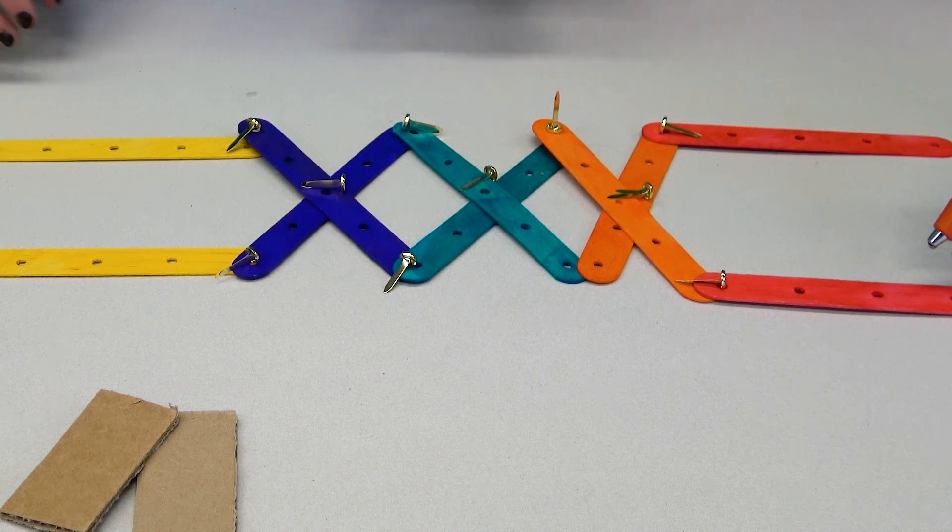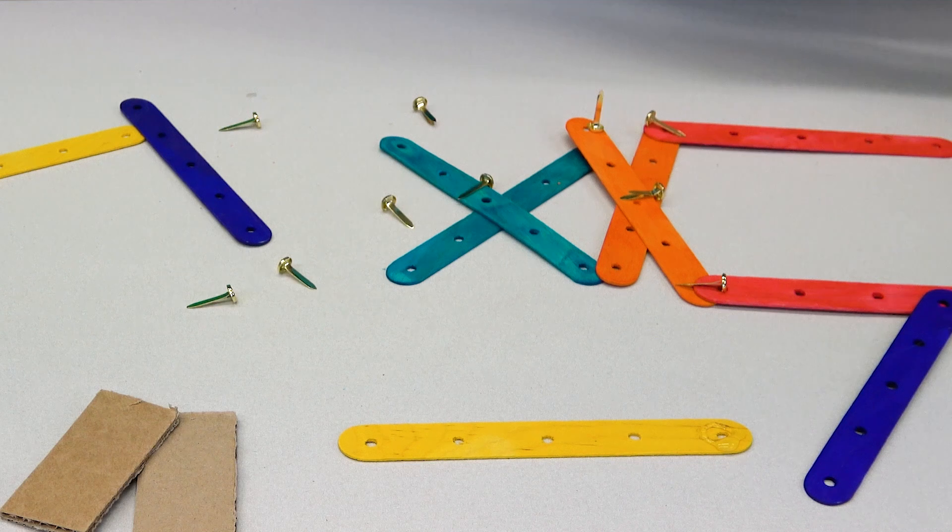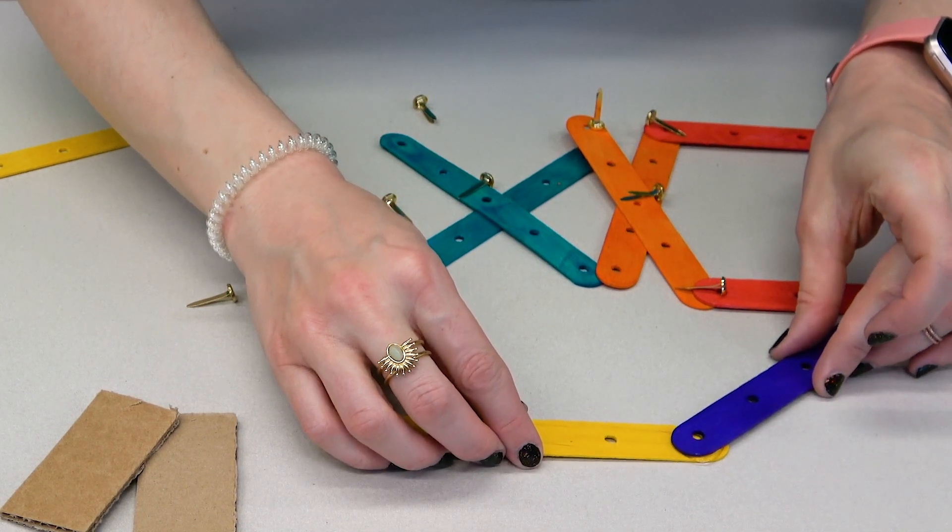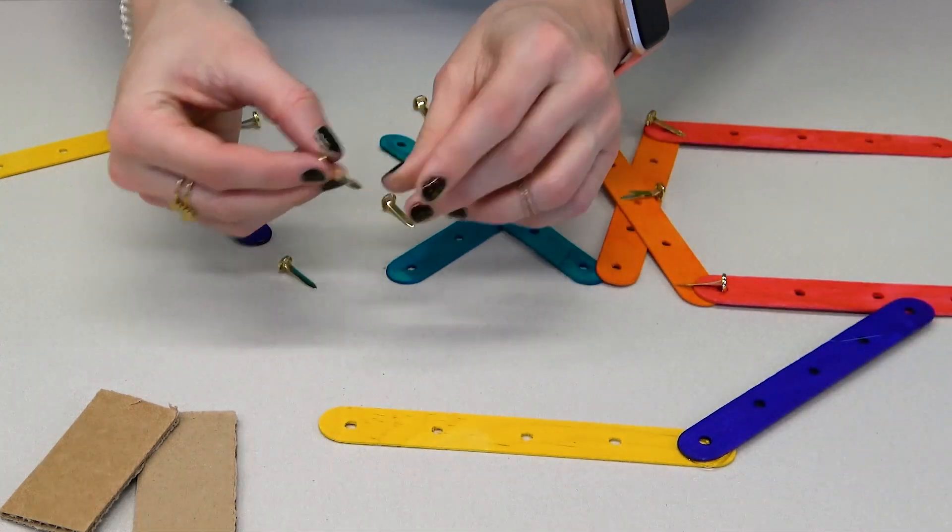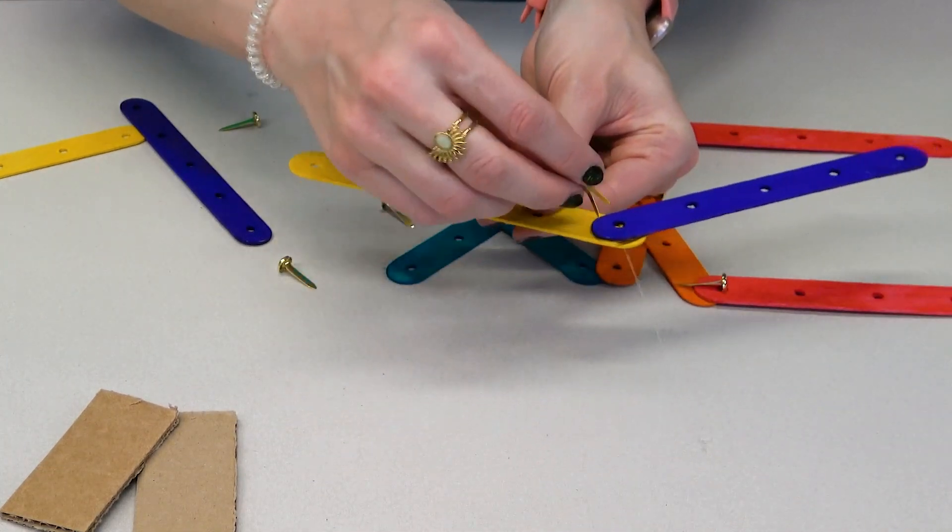Now we're ready to build. Take the handles and use the hot glue gun to glue the sticks from the first cross to the handle. If you like, push the pins through as they will help the sticks stay in position as the glue cools. Be very careful not to burn your fingers with the hot glue.